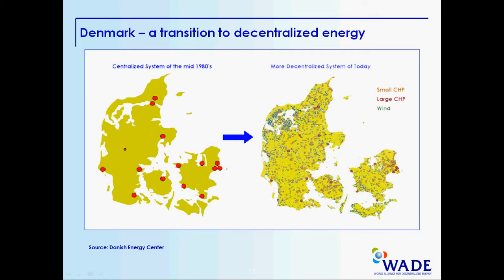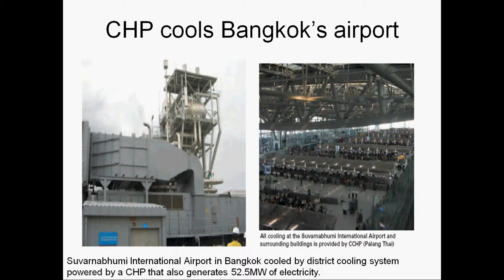In Thailand, one interesting decentralized power project that many of you have experienced is the 52.5 megawatt combined heat and power project at Suvarnabhumi Airport in Bangkok. The power plant makes electricity for the airport and also exports electricity to the grid. The waste heat from electricity generation powers a lithium bromide absorption chiller that cools the entire airport. This project was built as a joint project between EGAT, MEA, and PTT — the Petroleum Authority of Thailand — all huge state-owned companies. Since they own the grid and the gas supplies, this project didn't require a lot of government policies. The challenge is how to come up with policies that allow regular customers to implement decentralized generation.